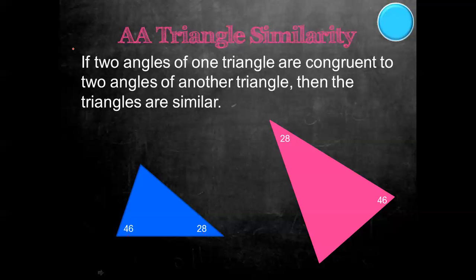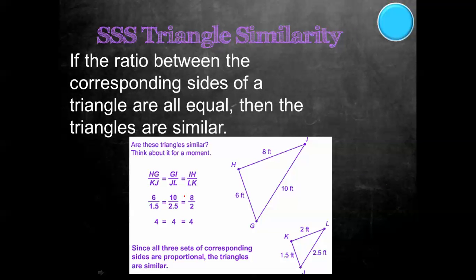For example, on this one, if we have a triangle that adds up to 180, we take 46 and add that to 28, which is 74. Then we take 180 and subtract 74, and we get 106. So we know that both triangles have that angle as 106, meaning all three angles match. You actually only have to be given two angles to show that the triangles are similar.